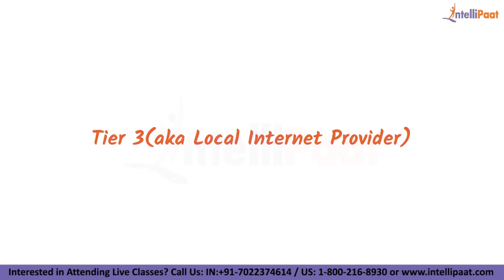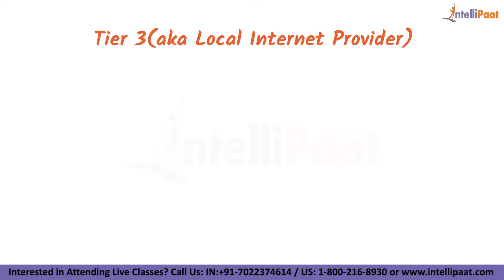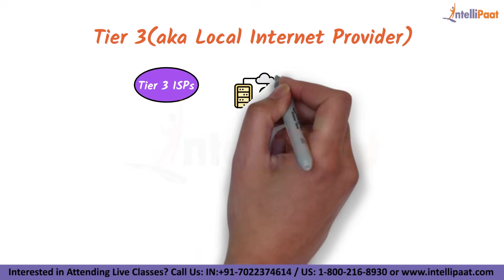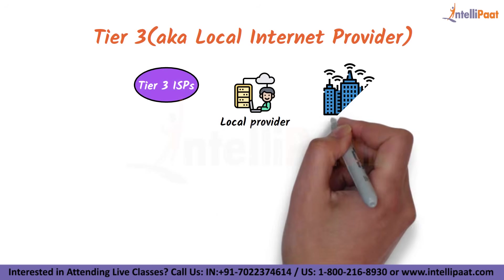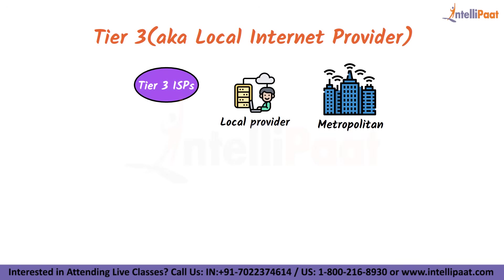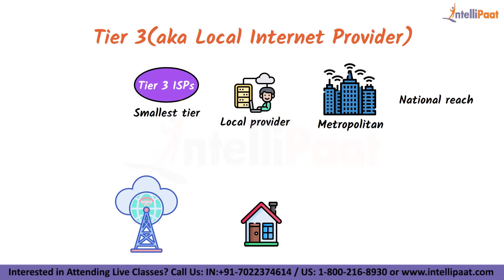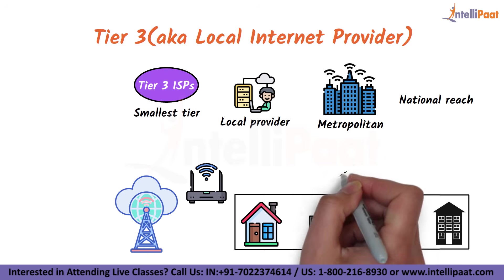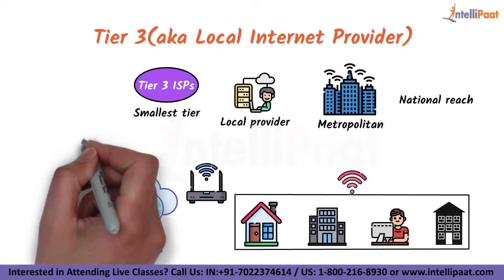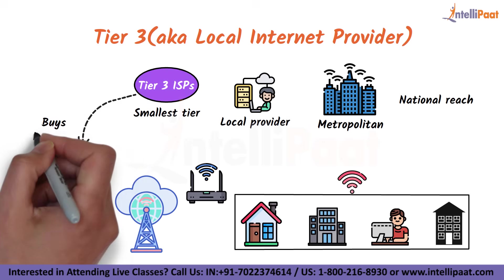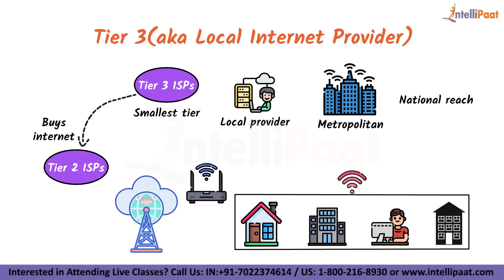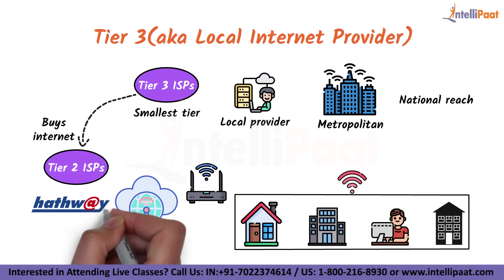Tier 3, also known as Local Internet Provider, is the smallest tier and is commonly called a local provider operating at metropolitan or national level. It provides internet services to homes, companies, and offices through routers, buying internet connection from Tier 2 companies. For example, Hathaway Broadband.